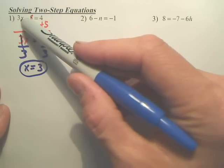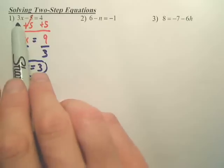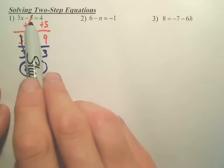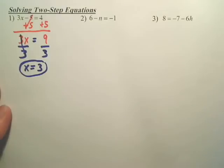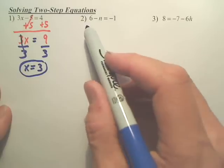So if you plug 3 back in, 3 times 3 is 9, 9 minus 5, does that get you 4? Yes. Two-step equation. Okay, number two.